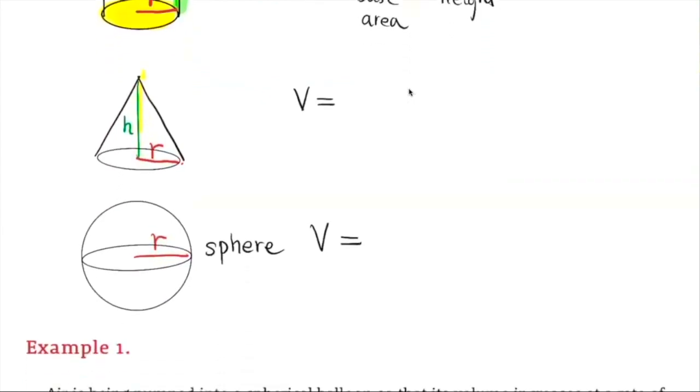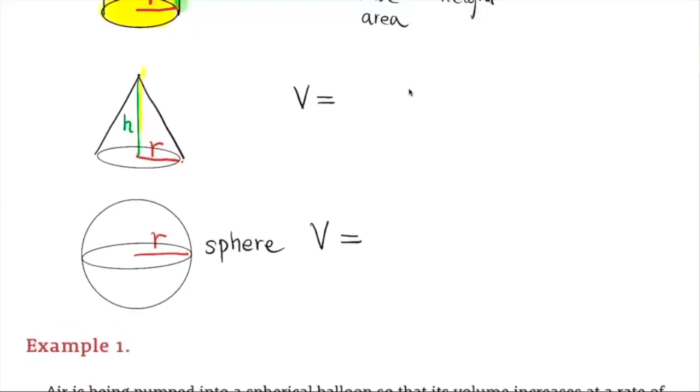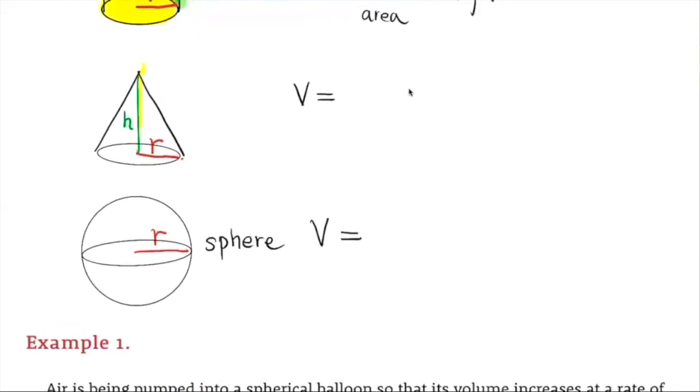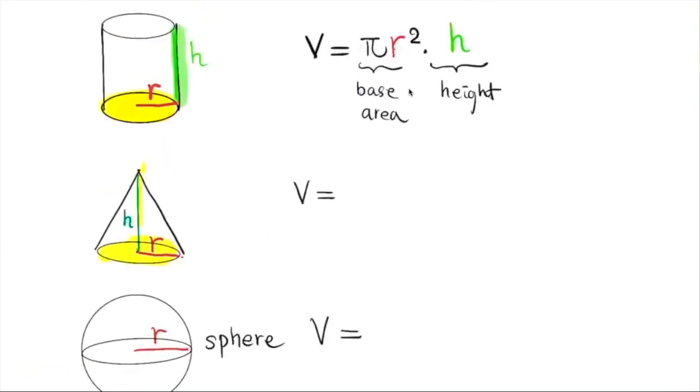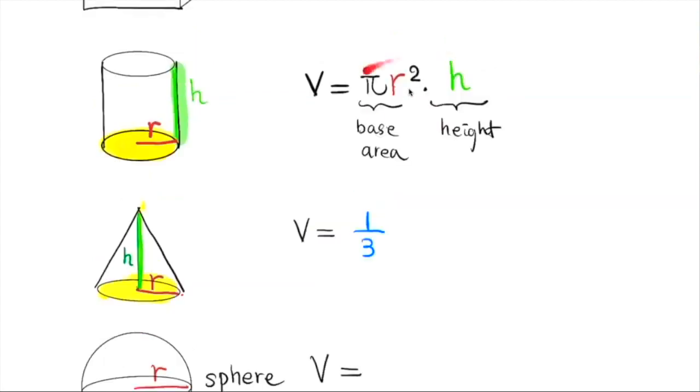The second one we want to review is the volume for a cone that has the base here to be a circle with radius R, and also the height for that is also H. So what's the volume for this cone over here? The volume for that is equal to 1/3 of this π R² H. So now write that down first.